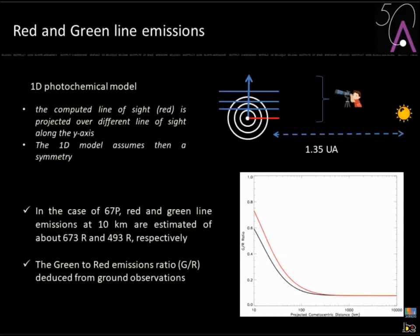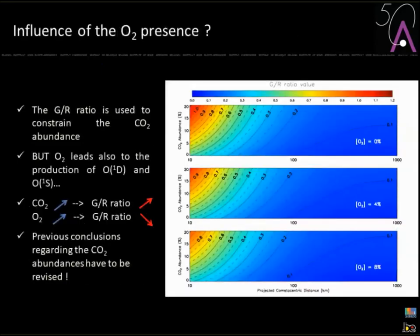Here you see the green-to-red ratio for two different cross-section models — an uncertainty I won't go into detail about. What is also very important is the influence of molecular oxygen O2 in the cometary atmosphere. Before the Rosetta detection, O2 was never included because it had never been measured and was thought to be too volatile to survive. The previous model relied only on H2O, CO2, and CO.